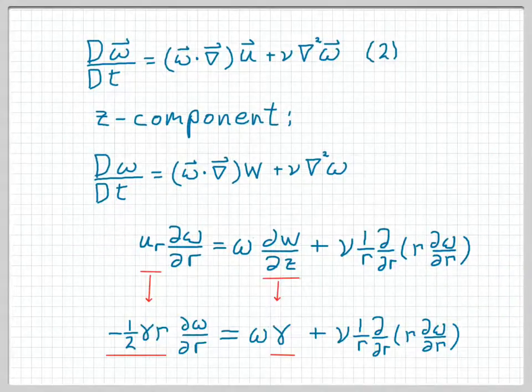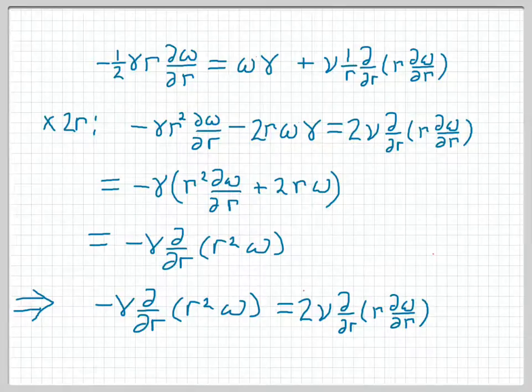We're getting closer to having something we can solve. Here is that equation again. And notice that the two components of the velocity field, u_r and w, are things that we already know. And we can substitute the known expressions for those. Because u_r is negative one half gamma r, and dw by dz is simply the constant gamma. Reproducing that equation here, we have negative one half gamma r d omega by dr equals omega gamma plus viscosity one over r d by dr of r d omega by dr. Can we solve this differential equation? This will take several steps, but it's pretty straightforward.